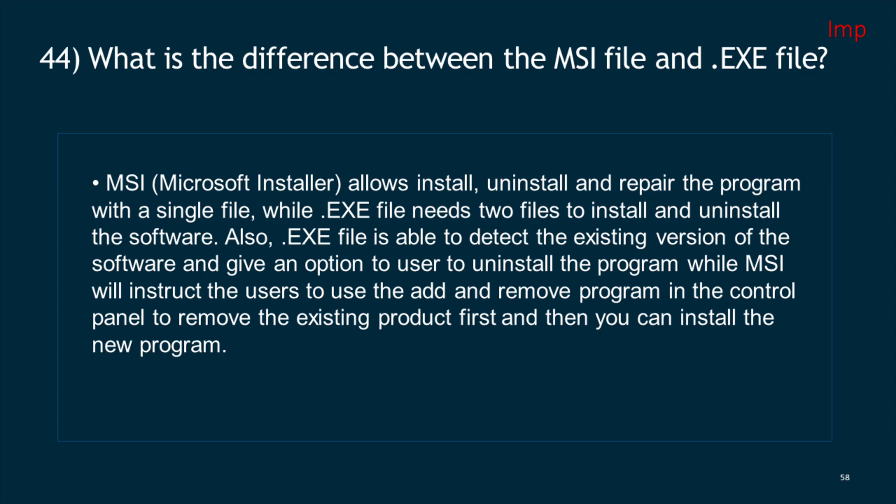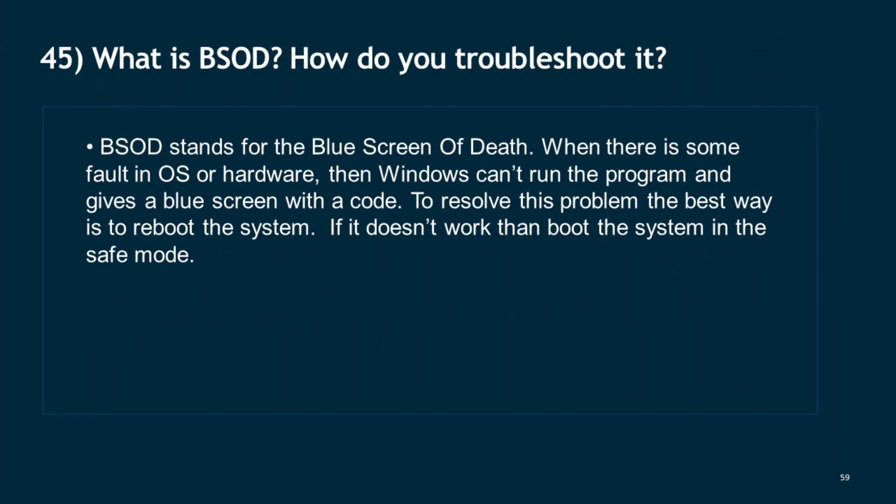Additionally, an .exe file is able to detect the existing version of the software and give the user an option to uninstall the program, while MSI will instruct users to use Add and Remove Programs in the Control Panel to remove the existing product first before installing the new program. Question 45: What is BSOD and how do you troubleshoot it? BSOD stands for Blue Screen of Death. When there is some fault in the OS or hardware, Windows can't run the program and gives a blue screen with a code. To resolve this, the best way is to reboot the system. If that doesn't work, boot the system in safe mode.